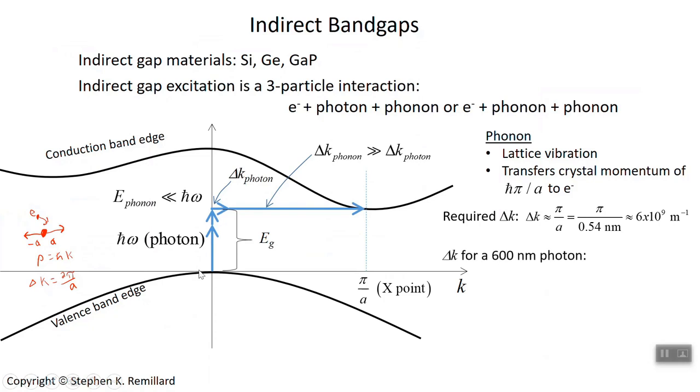The photon itself might be, say, a 600 nanometer photon. In which case, it's able to give a delta k of 2 pi over 600 nanometers is 600 times 10 to the minus ninth meters. k is 10 to the seventh per meter, which is less than 1% of what's needed.